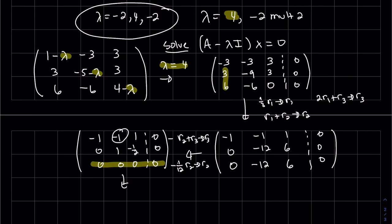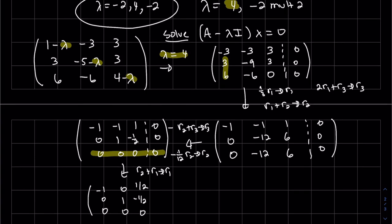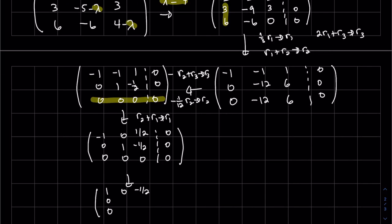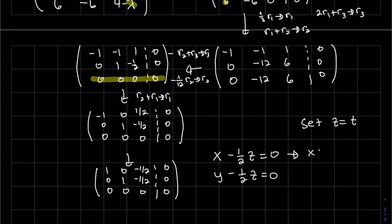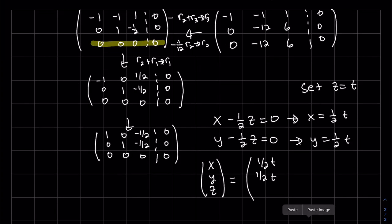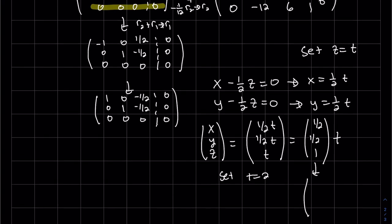Look at if I have a fraction there. Just multiplying that first row by negative. Not a big deal. So now my equations are. We could set my t equal to two and we can clear that fraction because it is a basis. And that's for my lambda is four.